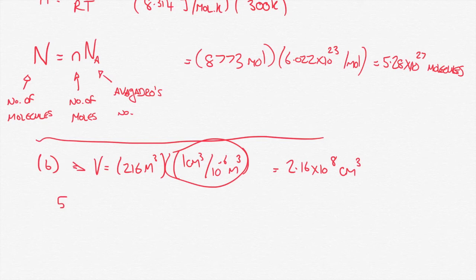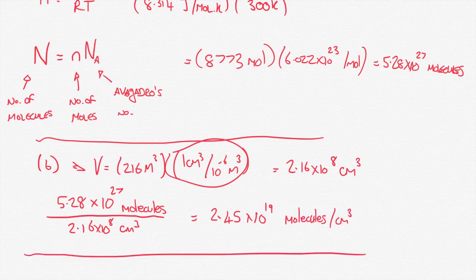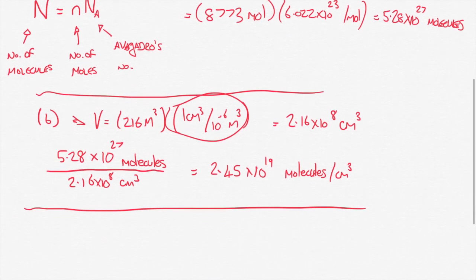So now it's quite straightforward to get from that to the density of nitrogen atoms in the room. We just divide the number of molecules that we calculated in the previous part by the volume of the room in centimetres cubed. And we get 2.45 by 10 to the 19 molecules per centimetre cubed as our density of molecules per centimetre cubed. So that's how many molecules per centimetre cubed we have.